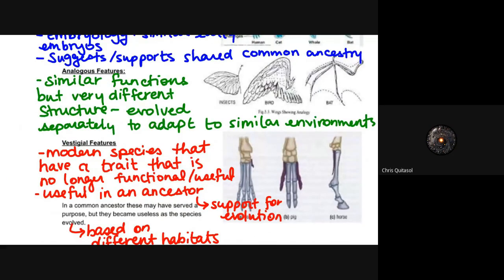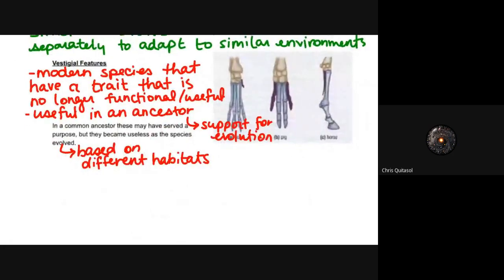With analogous features, organisms have a similar function but very different structures, as a result of different evolutionary traits. For example, insect wings, bird wings, and bat wings all allow for flight, but their structures are so different that it shows flight evolved in those species separately — they didn't share a common ancestor for that trait.